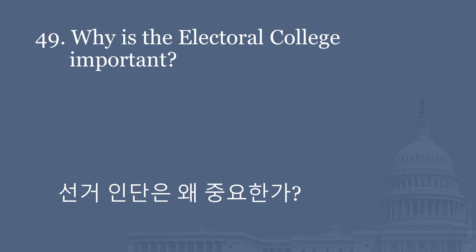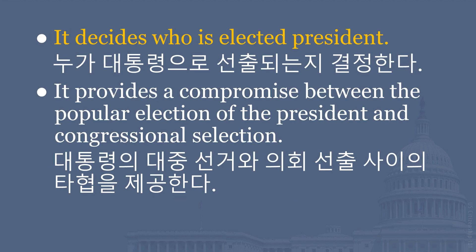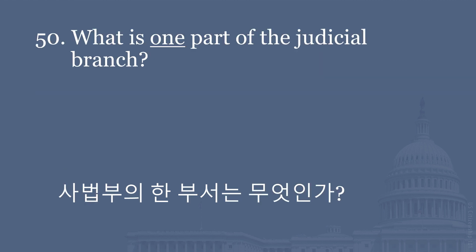Why is the Electoral College important? It decides who is elected President. It provides a compromise between the popular election of the President and Congressional selection. What is one part of the Judicial Branch? Supreme Court. Federal Courts.